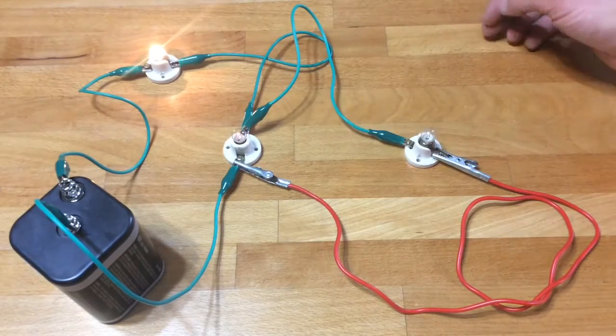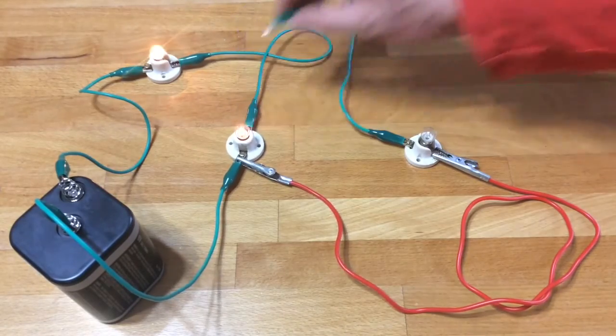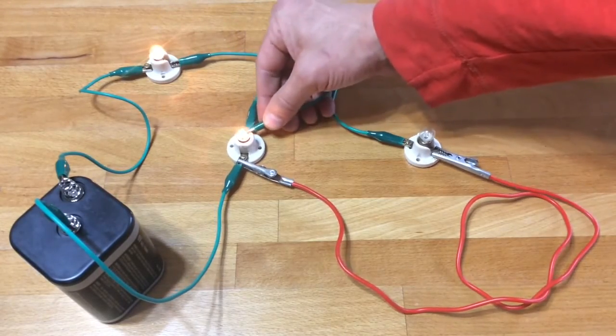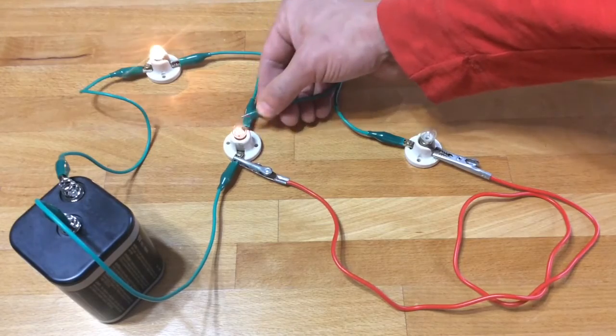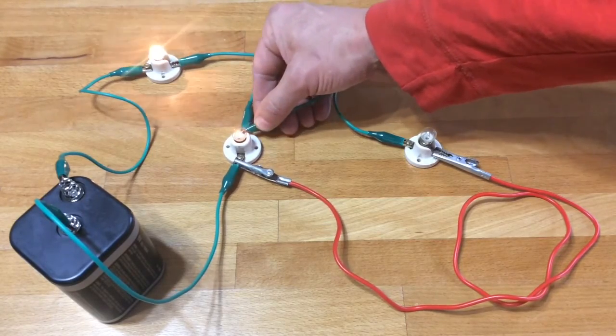Overall resistance of the circuit went down. Overall current went up. But all the current's flowing through the top left bulb, and only half of it's flowing through the other two. That's what you see.